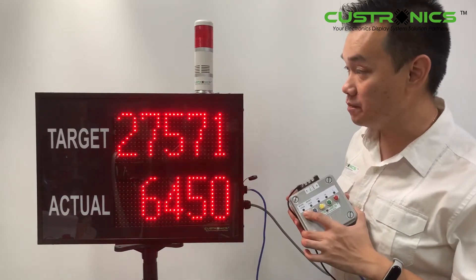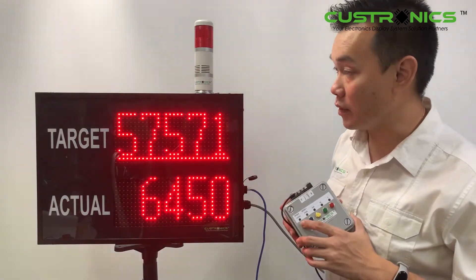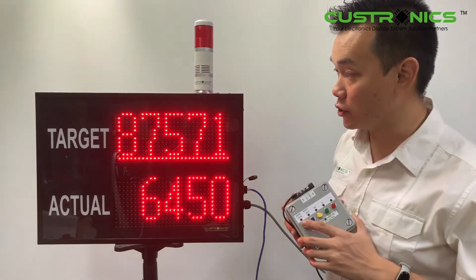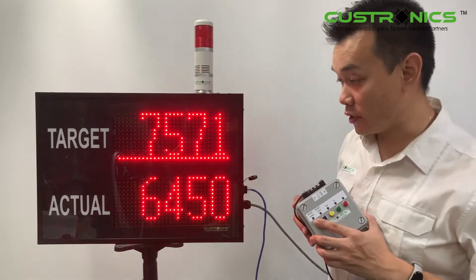Press and hold the button. Let's say today I want to demo 7571, so I make it zero at the front. Once you do the setting, press and hold.